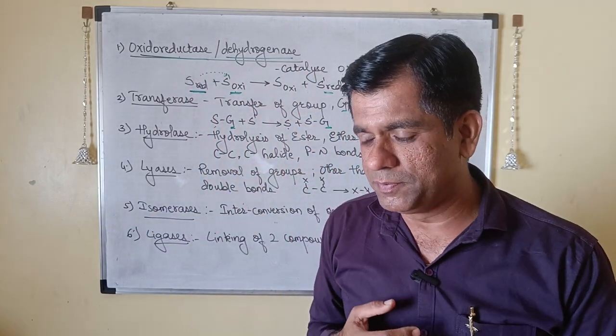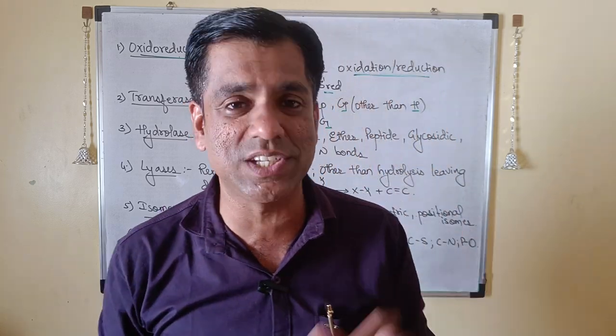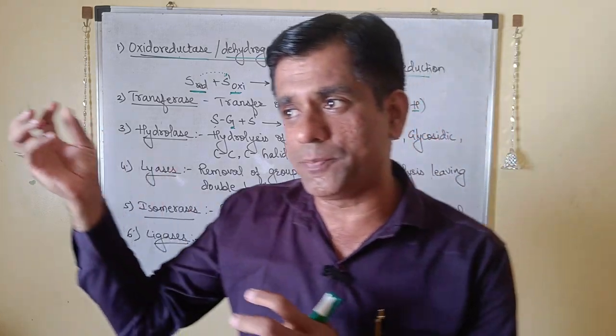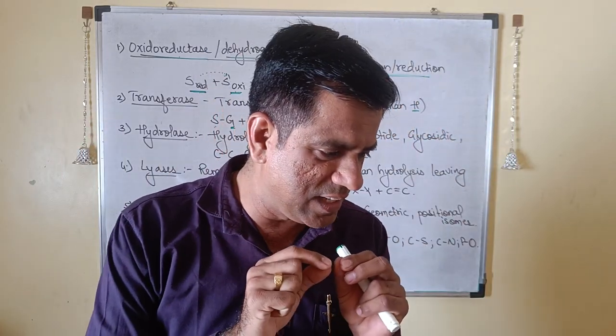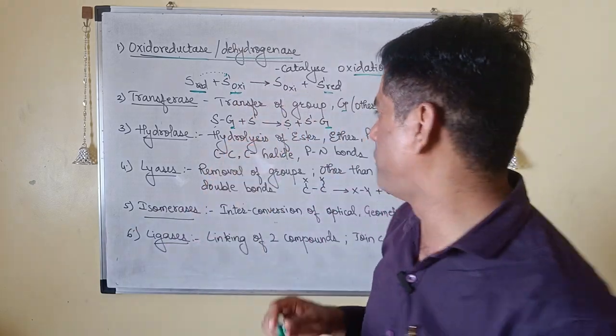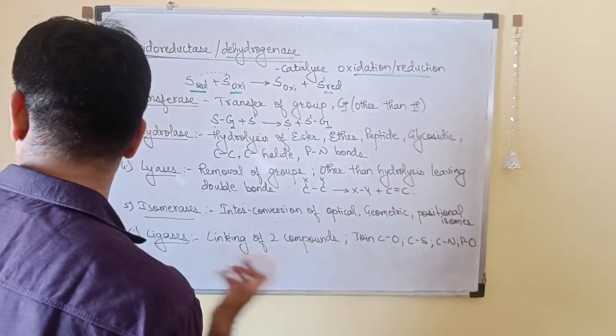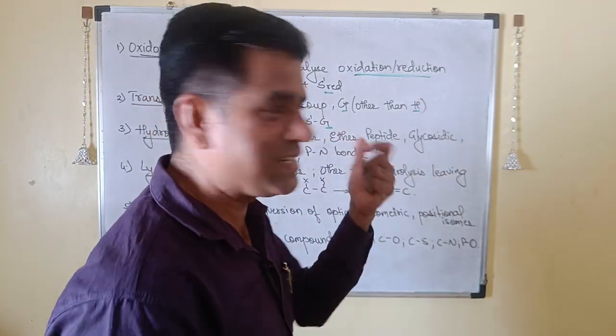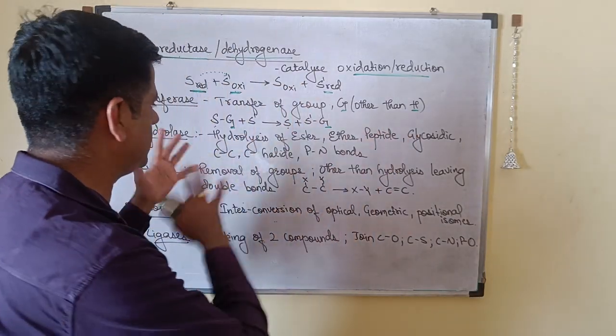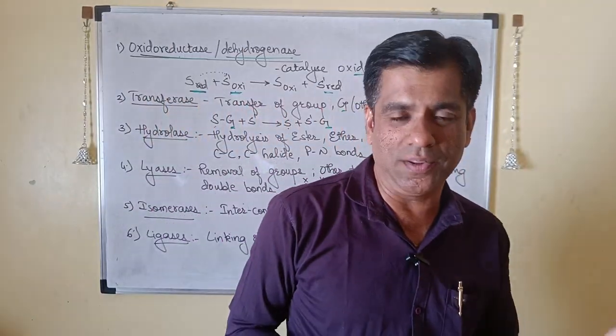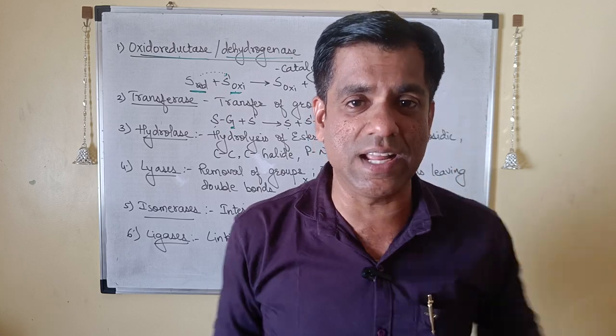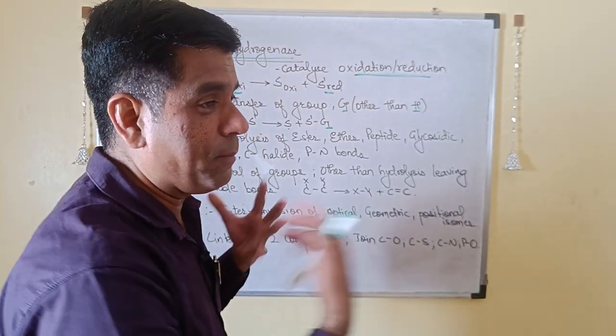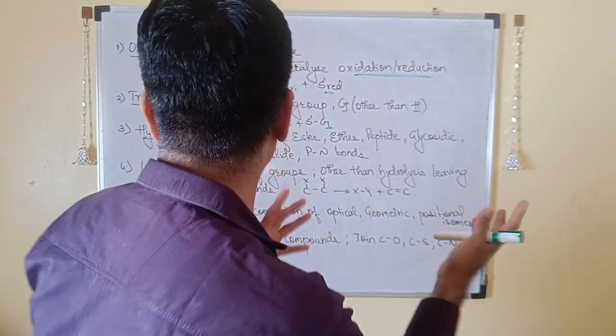The suicide bags, the lysosomes, they are also rich in hydrolases. So hydrolases are enzymes which are using water and they are catalyzing the lysis. So breaking the bond by adding water. So hydrolysis of ester, ether, peptide, glycosidic bonds. Enzymes which are doing hydrolysis come under hydrolase. Like your esterase, peptidase, amylase.